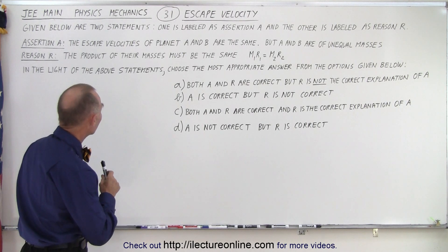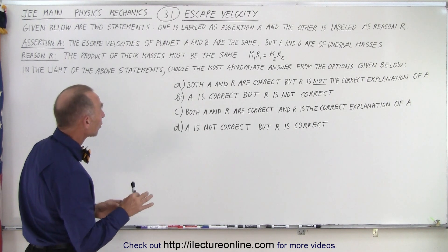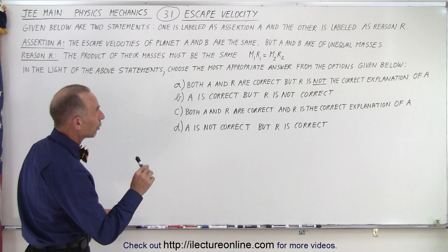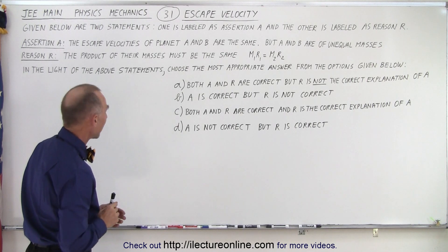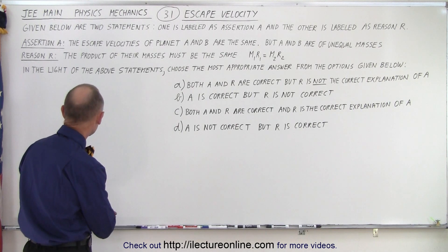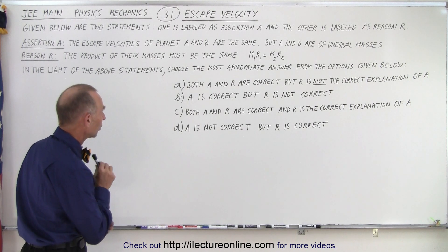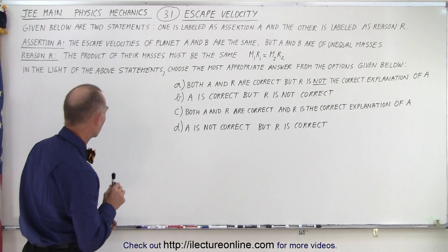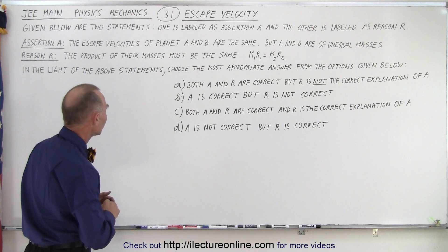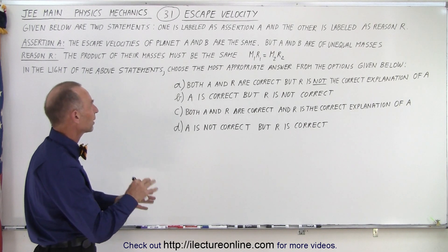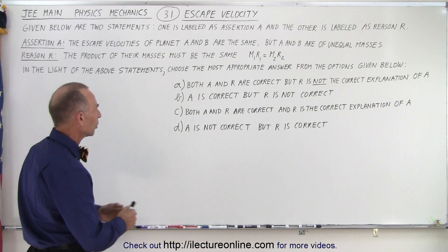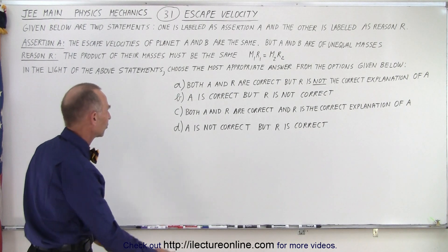Assertion A: the escape velocities of planet A and B are the same, but A and B are of unequal masses. The reason R says the product of their masses must be the same, M1R1 must equal M2R2. In the light of the above statements, choose the most appropriate answer from the options given below, and we have four possible answers.